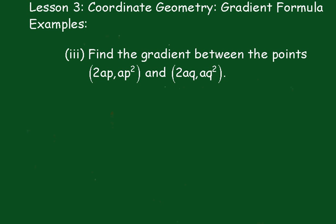OK, a little bit harder now, algebraic type. So m equals y₂ minus y₁ over x₂ minus x₁. Labeling these: x₁ y₁, x₂ y₂.